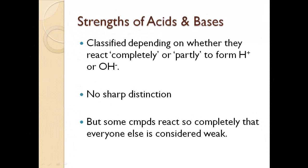Acids and bases are classified as strong or weak depending on whether they react completely or partly to form hydrogen ions or hydroxide ions. There's really no sharp distinction between a weak and a strong acid — it basically depends on how completely they dissociate. Some compounds, like hydrochloric acid, react so completely that everyone else is considered weak, since those produce hydrogen or hydroxide ions so strongly and easily.